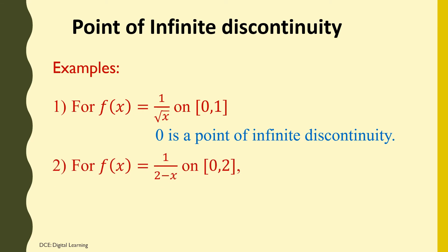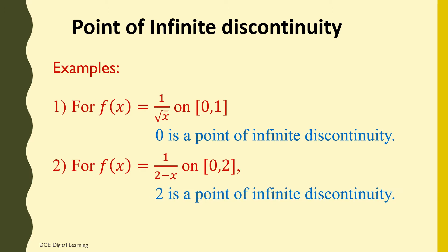Second example: f(x) = 1/(2 − x) on the closed interval [0, 2] is not defined when x = 2. Therefore, the upper limit 2 is a point of infinite discontinuity of this function.